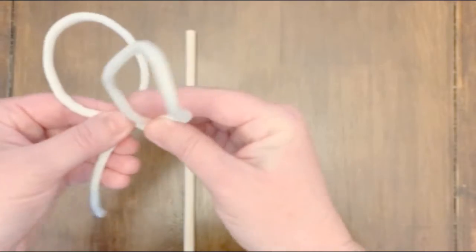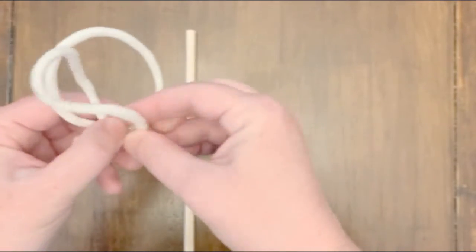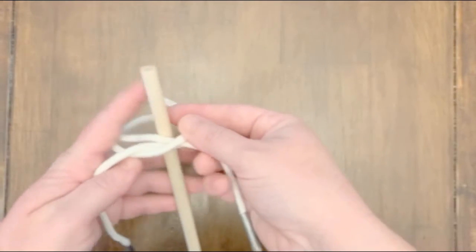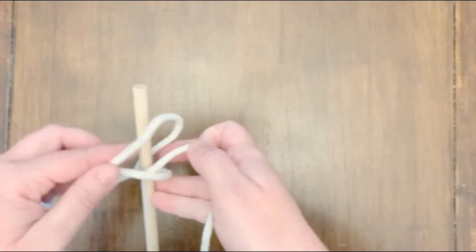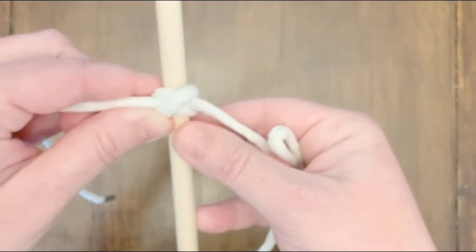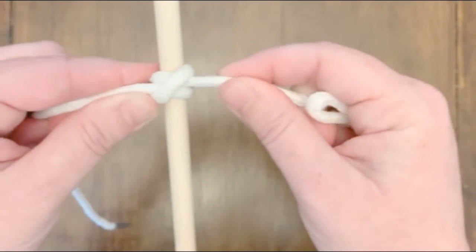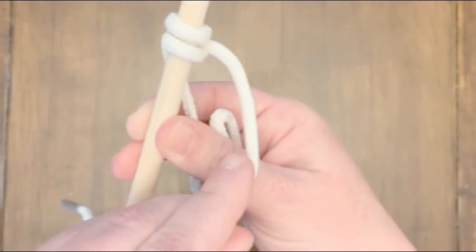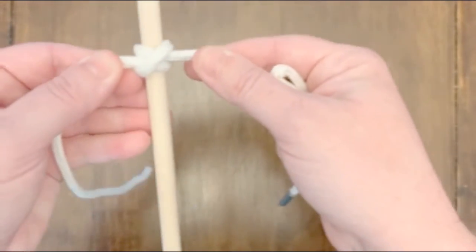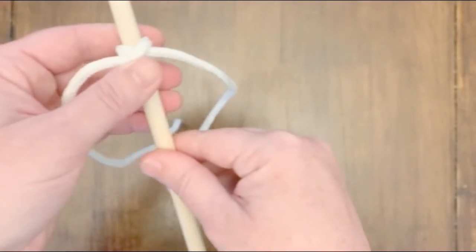You're going to cross the loops, slide it onto your pole, and tighten it down. And you'll have a little X. So that's the modified clove hitch. I'll show it to you one more time.